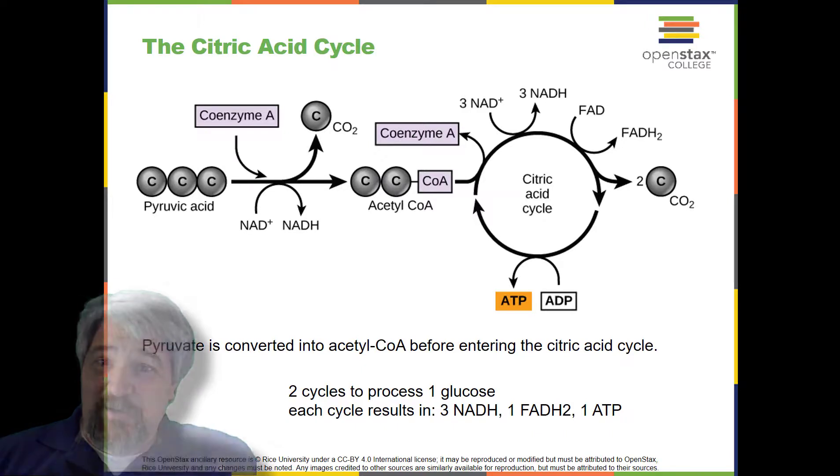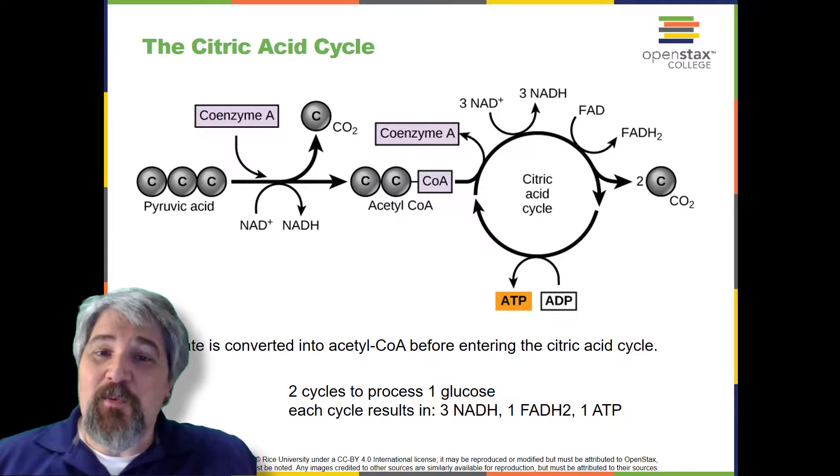The Citric Acid Cycle. In eukaryotic cells, the pyruvate molecules produced at the end of glycolysis are transported into mitochondria, which are sites of cellular respiration. If oxygen is available, aerobic respiration will go forward.